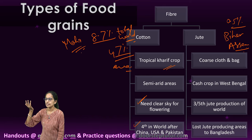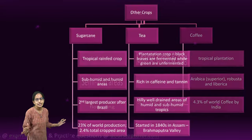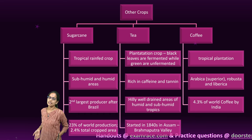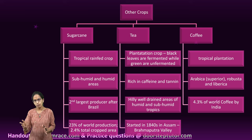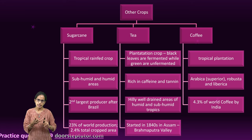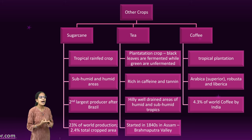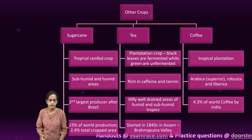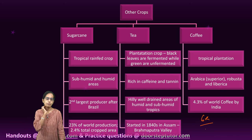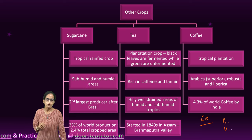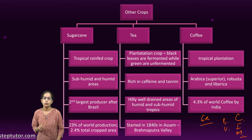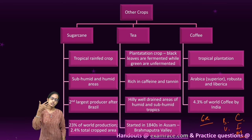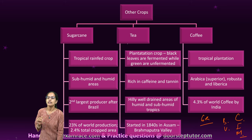Coffee plantations are in tropical areas. There are three important varieties: Arabica, Robusta, and Liberica. Arabica is the most superior and most cultivated form in India. India contributes 4.3% of world coffee production but ranks 6th globally, after Brazil, Vietnam, Colombia, Indonesia, and Mexico.